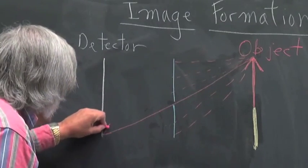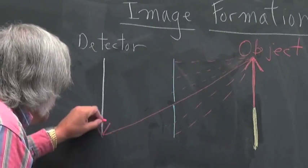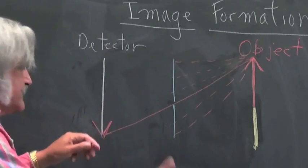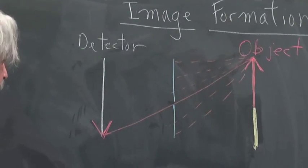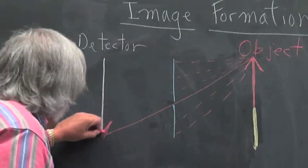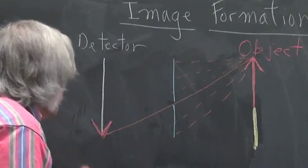So the only place that the tip of the arrow will show on our detector is down here. And we will see, eventually, if we were to turn that film in the direction so we could see it, an image of the tip of the arrow.